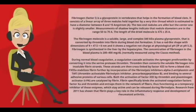Fibrinogen is synthesized in the liver by the hepatocytes. The concentration of fibrinogen in the blood plasma is 200–400 mg per deciliter, normally measured using the Clauss method.